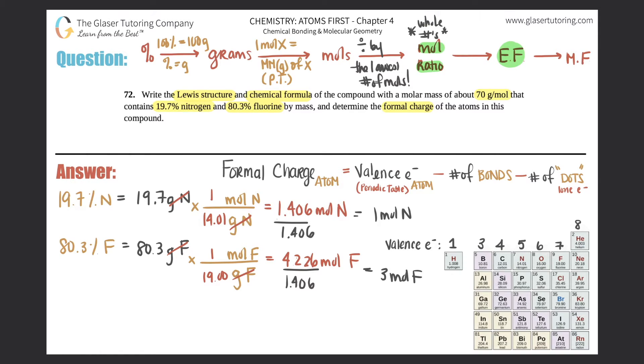Now we have our empirical formula. All you do is take those numbers and turn it into your empirical formula. We have one mole of nitrogen, we have three moles of fluorine, so this would turn into N1F3. But if you want to get rid of the one, I would just say this is NF3.